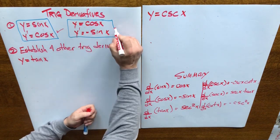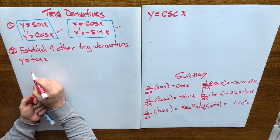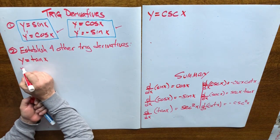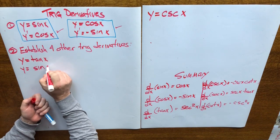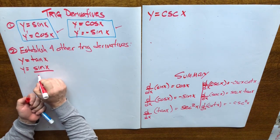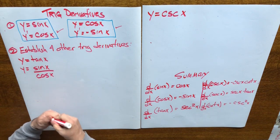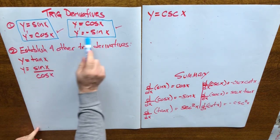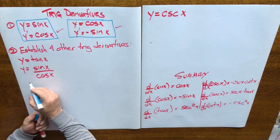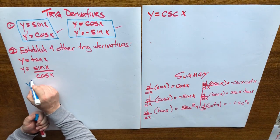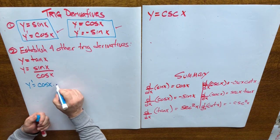Let's start with tan x, using these two derivatives and identities to find the derivative of tan x. Tan x can be expressed in terms of sine and cosine: tan x is equal to sine x over cosine x. Now that we have that, we can use these two derivatives to take the derivative of this expression. So y prime equals the denominator cos x times the derivative of the numerator